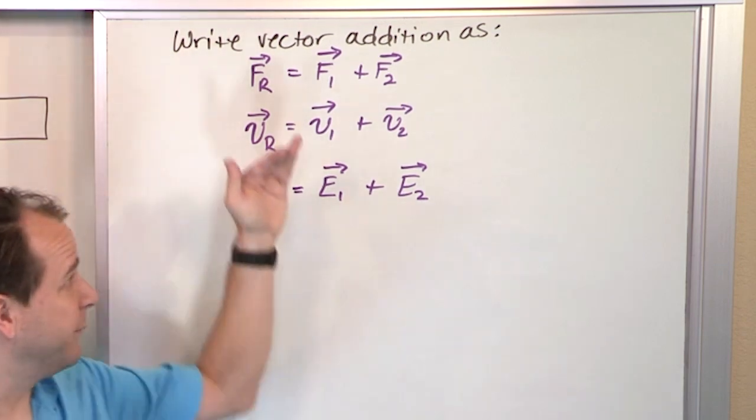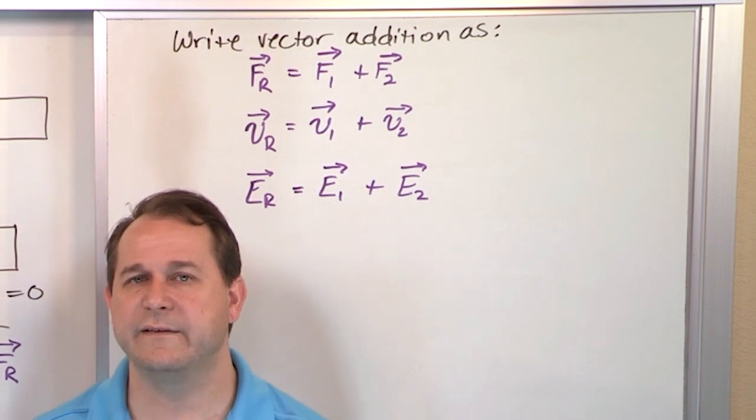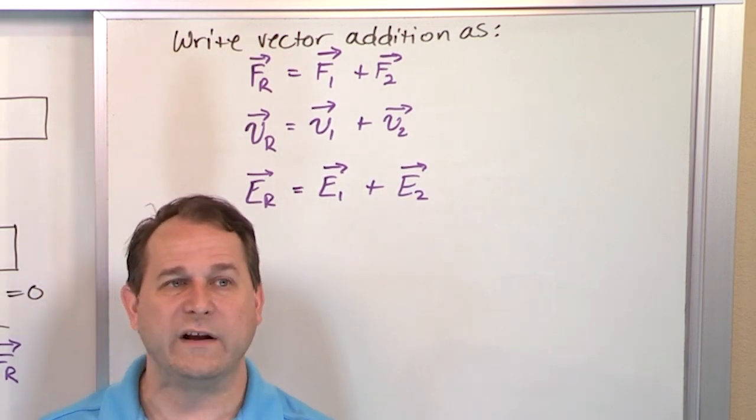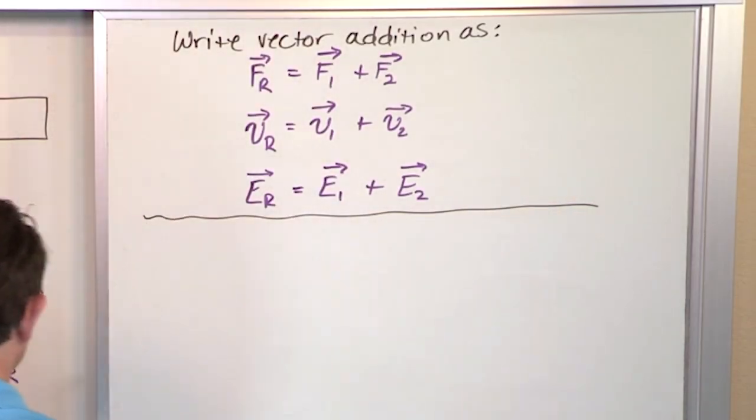They are different in terms of the variables we label them and all this, and they represent different things. But the vector addition itself is exactly the same. Because once we know they're vectors, they're all treated the same way in terms of how to add them. Let's go ahead and leave this on the board like this.